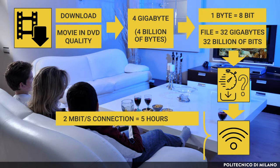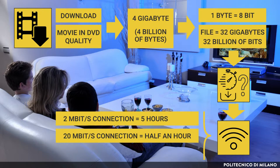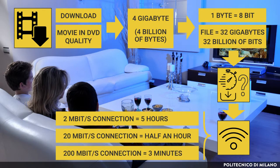If you have a 2 Mbit per second connection you need about 5 hours, so you cannot watch the movie in real time, or as we usually say, in streaming. If you have a 20 Mbit per second connection you need about half an hour — now you can also stream it and view it in real time. If you have a 200 Mbit per second connection you need about 3 minutes, which opens the possibility for instance to make a backup of the file.